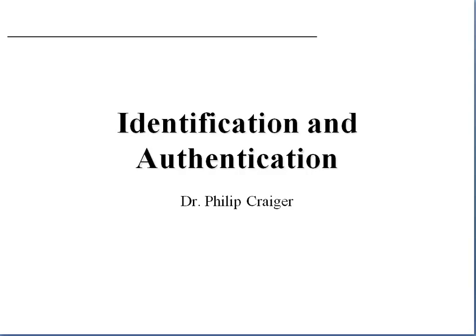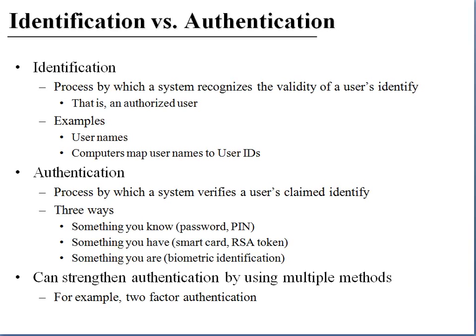In this video we will discuss identification and authentication as it relates to system security. The process of identifying and authenticating the user are essentially two separate processes. Identification is the process by which a system recognizes the validity of a user's identity — verifying whether a user is authorized or not — and this is done by several means, typically via usernames.